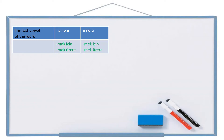Let's start with an example. The example is: I went to supermarket to buy bread. Let's try to write this together. I — ben. Bread — ekmek. Buy — al. To buy — almak için.